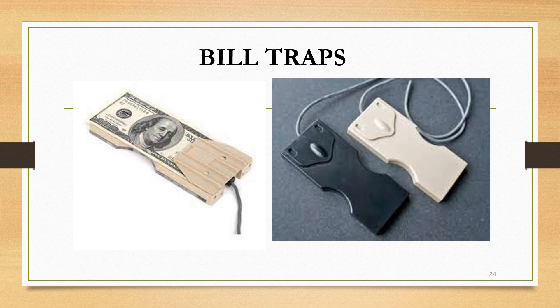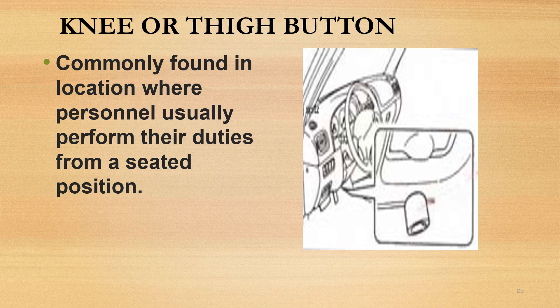When currency is removed from the device, the alarm is activated. The advantage of these devices is that robbers frequently remove the currency and activate the alarm. Knee or tie button — installed inside the desk or teller station so it can be activated by the knee or by tie pressure. It is commonly found in locations where personnel usually perform their duties from a seated position.